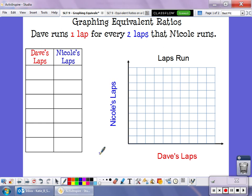We can graph equivalent ratios by using an equivalent ratio table. For example, in this situation, it says that Dave runs one lap for every two laps that Nicole runs.